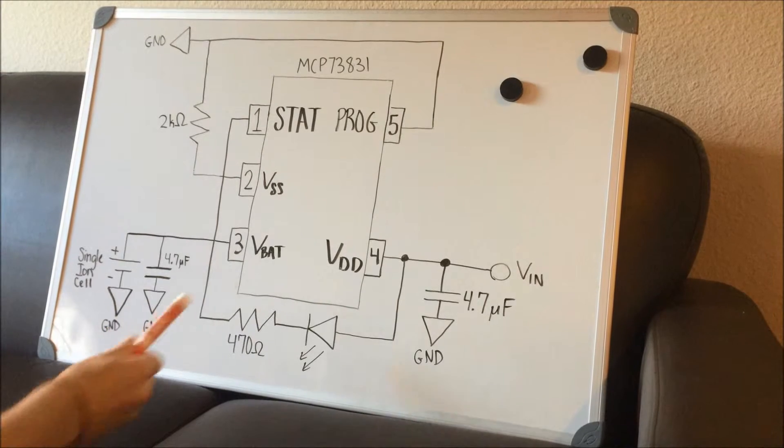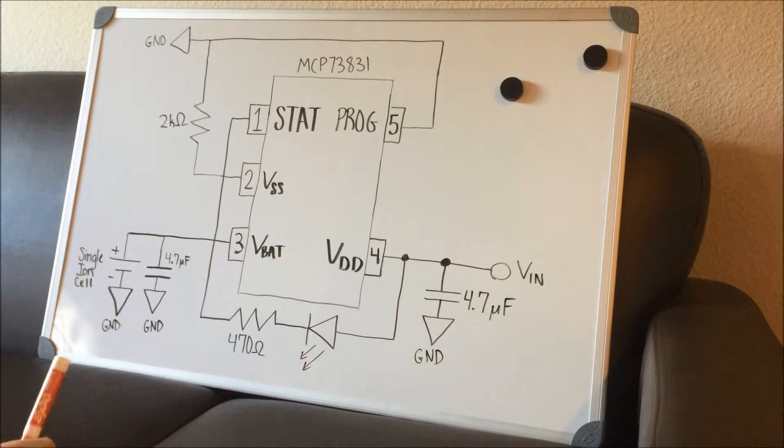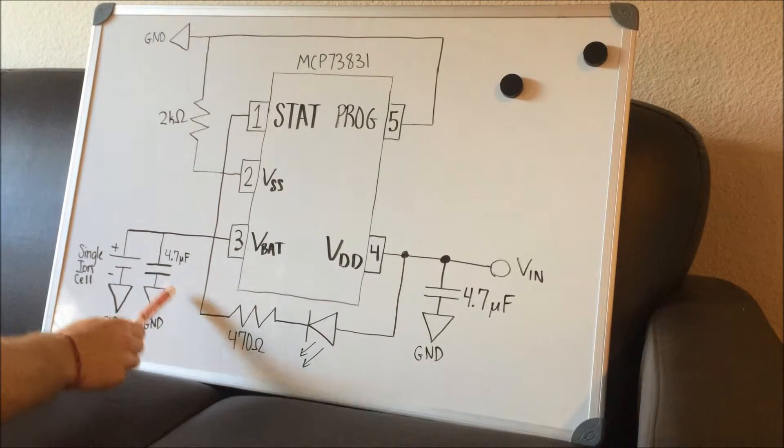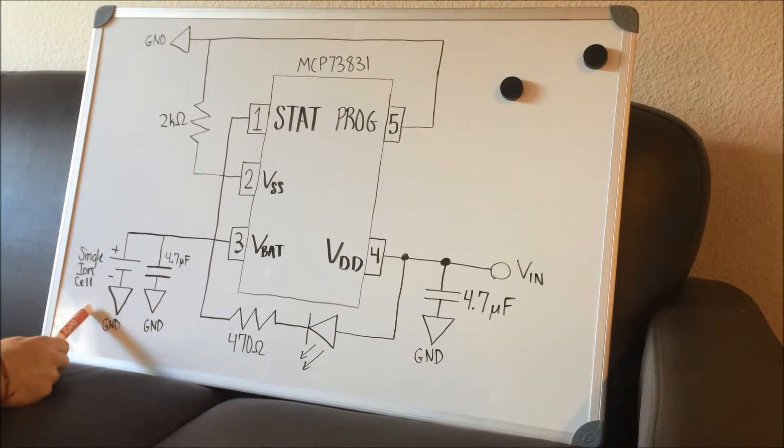The last part of this circuit is the VBAT pin, which goes from here to the 4.7 microfarad capacitor. And then this is the actual battery cell.